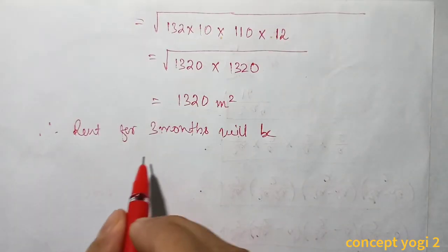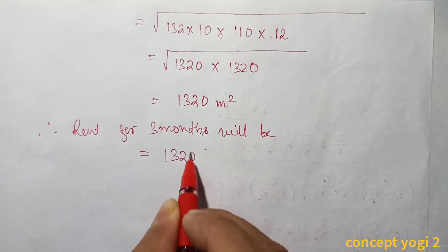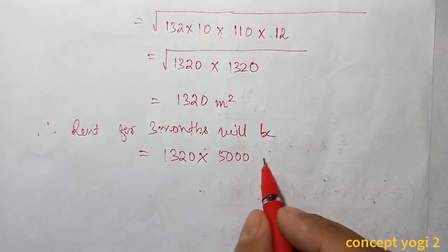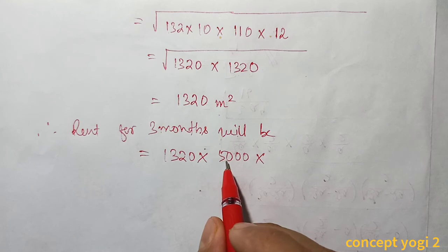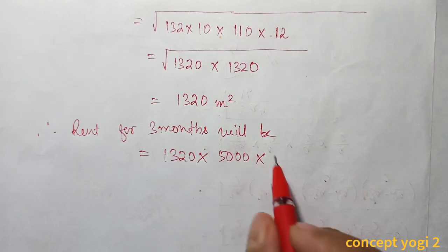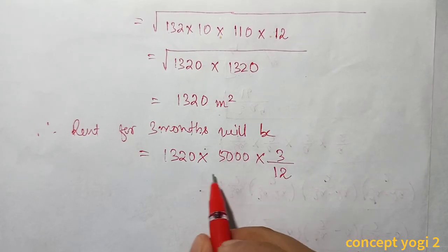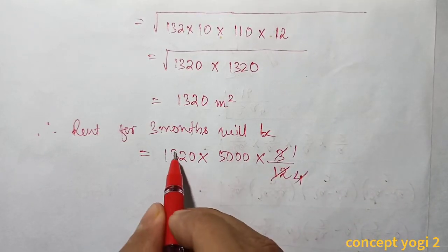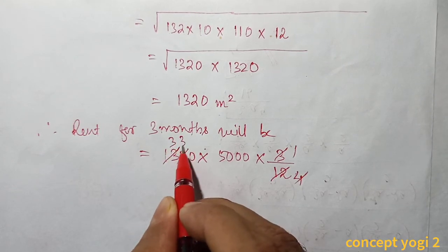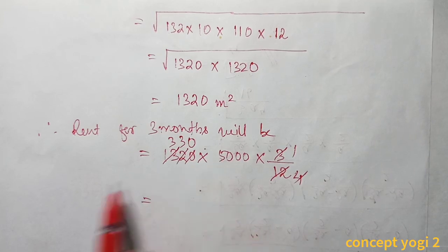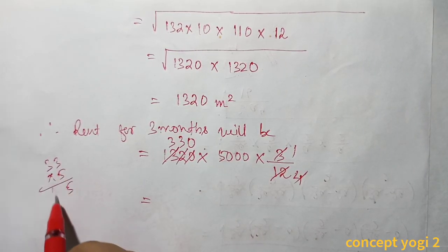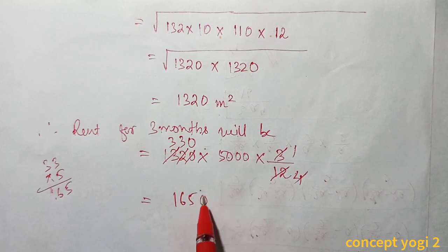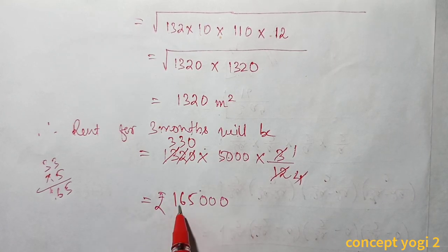Now finding the rent for 3 months: Area = 1320 m², cost = ₹5000 per m² per year. Rent for 3 months = 1320 × 5000 × (3/12) = 1320 × 5000 × (1/4) = 1320 × 1250 = ₹16,50,000. So the company paid ₹16,50,000 as rent for three months.